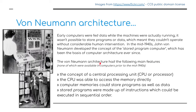Let's look at the history behind computers and the von Neumann architecture. Early computers, around the turn of the 1940s, were fed data while the machines were actually running. It wasn't possible to store programs or data, which meant they couldn't operate without considerable human interaction. In the mid-40s, John von Neumann developed the concept of the stored program computer, which has been the model for all computers ever since. The von Neumann architecture features the concept of a central processing unit, a CPU able to access memory directly, memory that could store programs as well as data, and stored programs made up of instructions executed in sequential order.